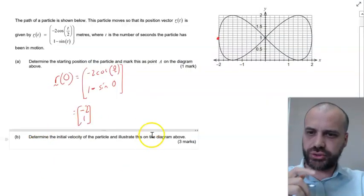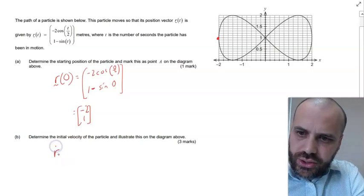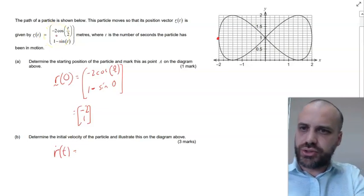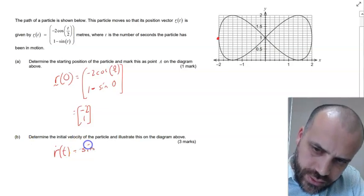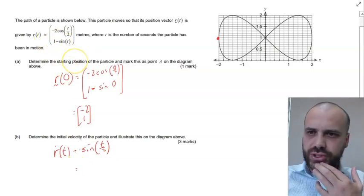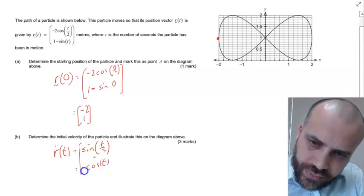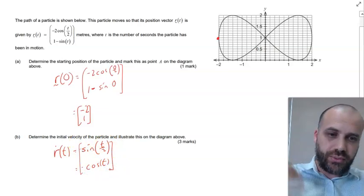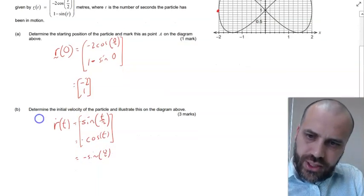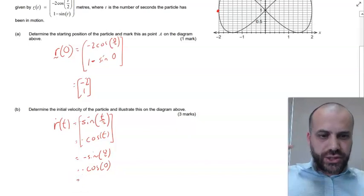Next up, we want to determine the initial velocity, so we're going to find the derivative of our displacement. So R dot of T — the derivative of negative 2 cos(T/2) is going to be sine(T/2), and the derivative of 1 minus sine T — derivative of sine is cos — so negative cos T. There's our velocity function. We can sub T in for 0: negative sine(0/2) and negative cos 0, and that should give us our initial velocity.